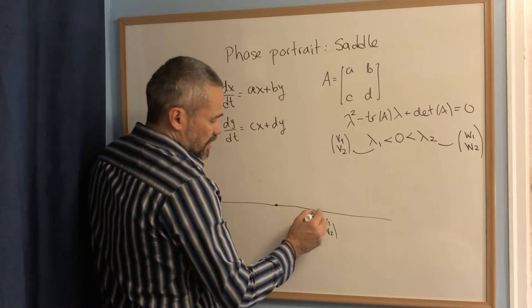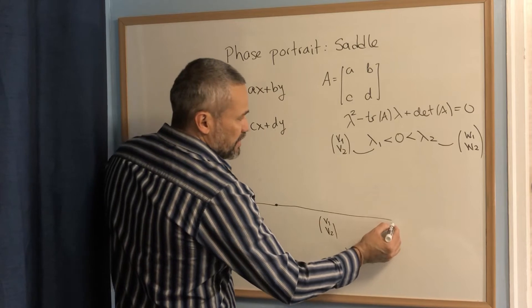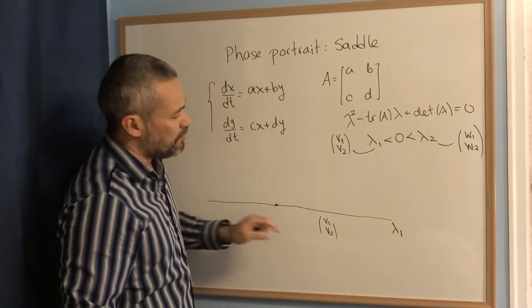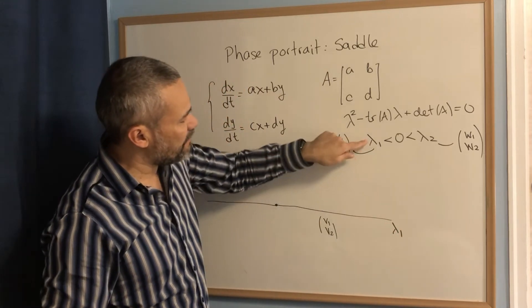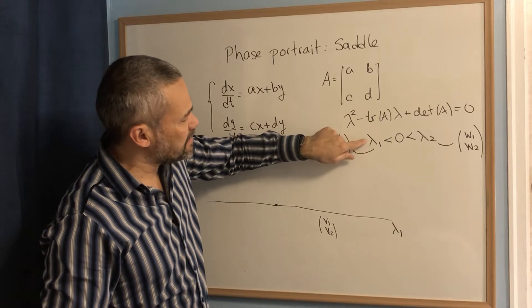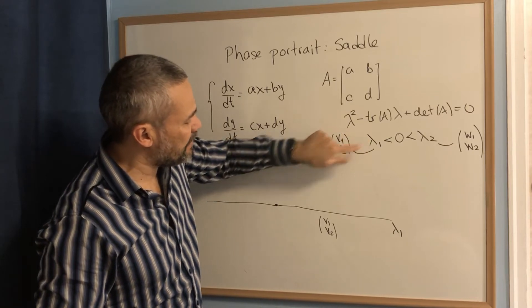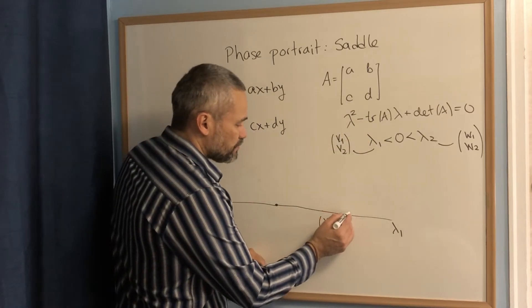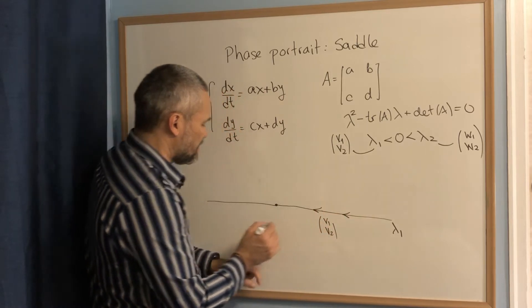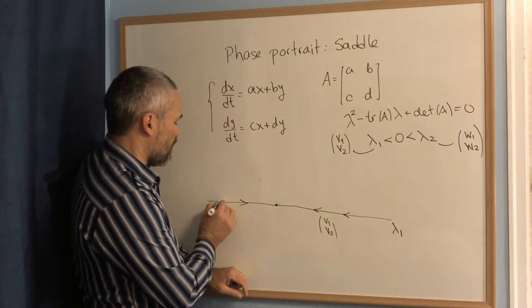And here we label this as lambda one because this line goes with the eigenvalue lambda one. And since lambda one is negative, then the arrows in these semilines, they go toward the origin.